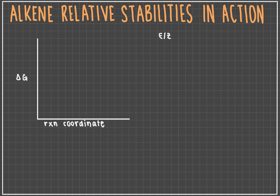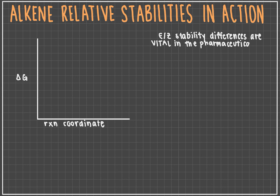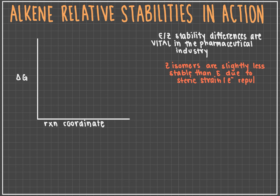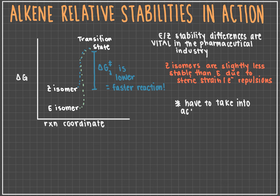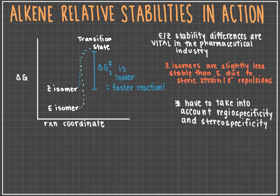E and Z isomer stability can actually be vital for professionals in the pharmaceutical industry. As we saw earlier, Z isomers are typically less stable due to electronic repulsions of the larger groups bonded to the same side of the double bond. In turn, Z stereoisomer reagents may react slightly faster than their E counterparts because of greater potential energy — the activation energy is slightly lower and the reagent is closer in energy to the energy of its transition state. However, it's important to understand that in some region-specific or stereospecific reactions, you won't get the same products with cis or trans alkene reagents. So both of these factors have to be taken into account when synthesizing drugs.